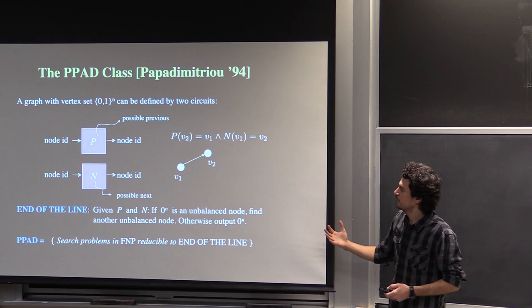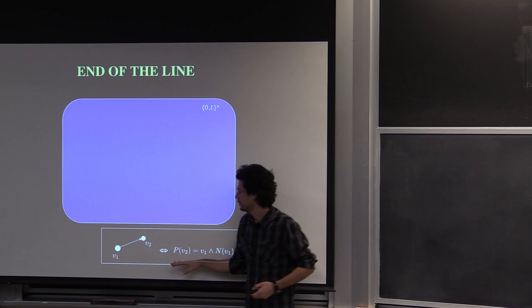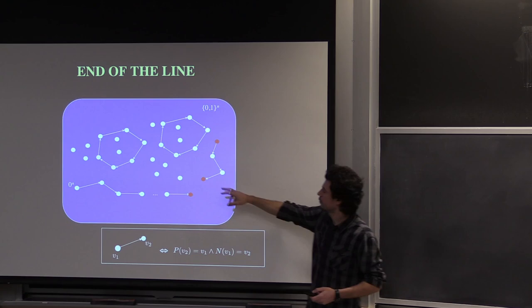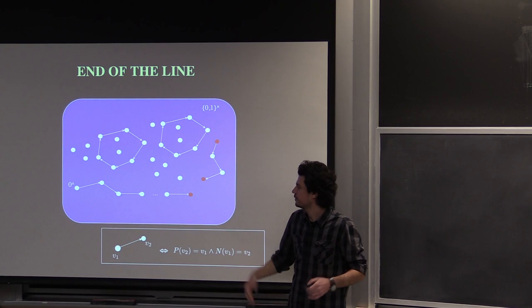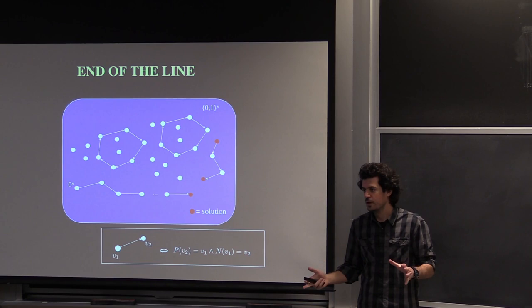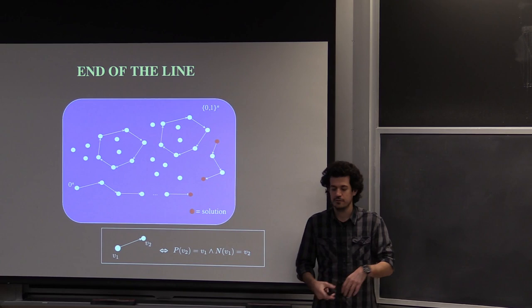The graph induced by the two circuits has every vertex with in-degree and out-degree at most one. The End-of-the-Line problem is: given these two circuits and the corresponding graph, if the all-zero string is unbalanced — meaning different in and out degree — find another unbalanced node, which is guaranteed to exist by the parity argument. PPAD is the class of all search problems in FNP that are polynomial-time reducible to this problem.